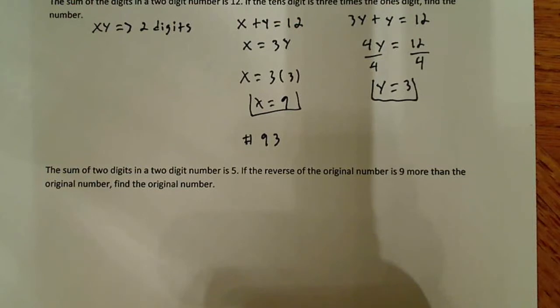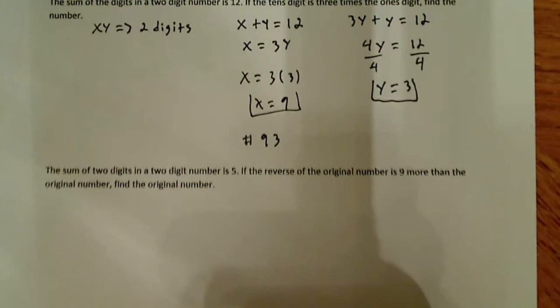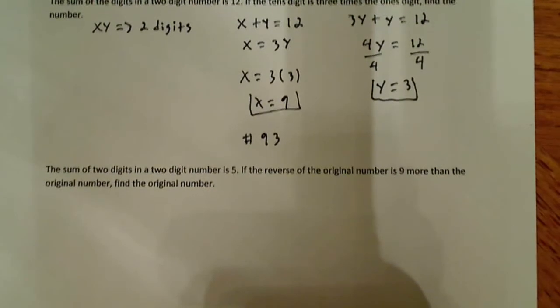All right, let's do a more complicated problem. It says the sum of two digits in a two-digit number is 5. If the reverse of the original number is 9 more than the original number, find the original number.